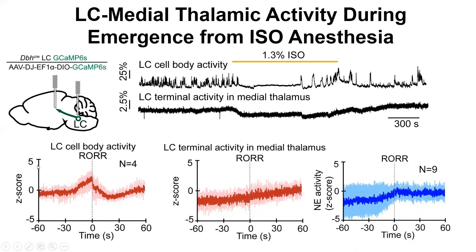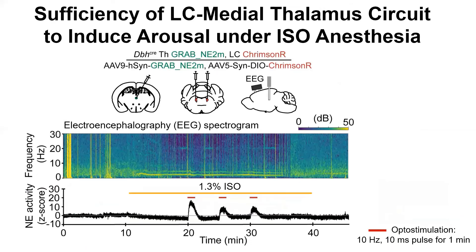Focusing specifically on emergence, you can see again at the time of righting there is a significant increase in LC activity at the cell body. If you look at the terminal, you also see an increase in LC activity, but there is a change in the slope of activity occurring at the time of righting. In a separate experiment where I express a fluorescent norepinephrine sensor in the medial thalamus, I'm able to show increased norepinephrine release leading up to the righting response.